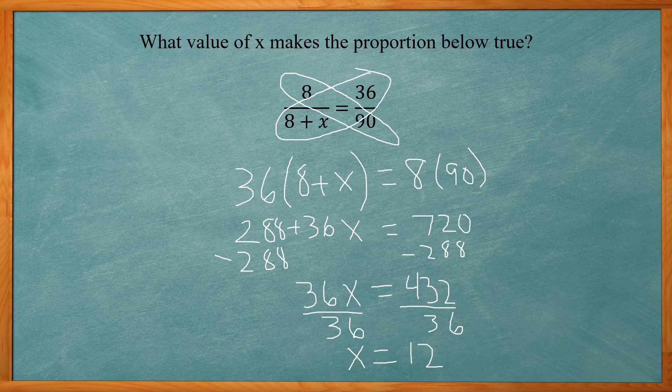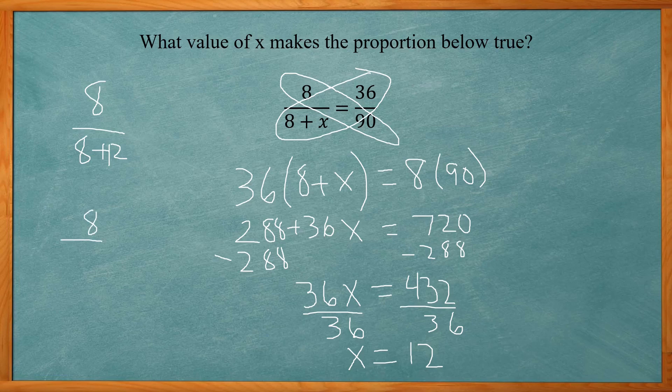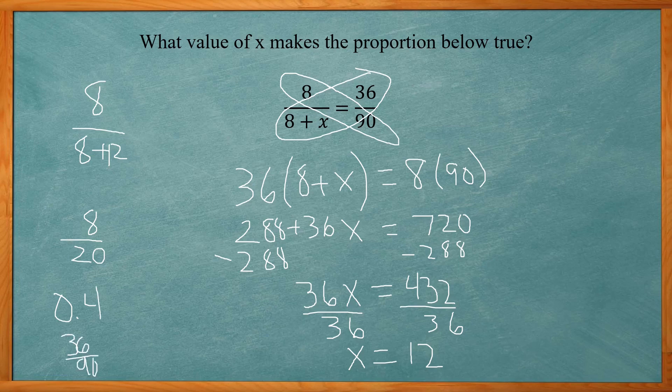So 8 over 8 plus 12, or 8 over 20, has the same proportion as 36 over 90. And simply you can just divide those two just to verify. So 8 divided by 20 is 0.4, and 36 over 90 is also 0.4.